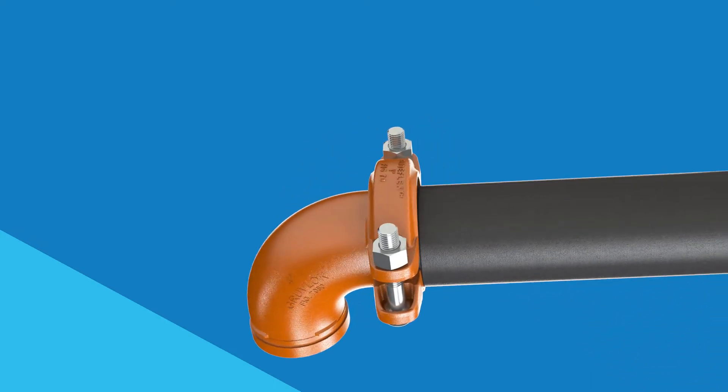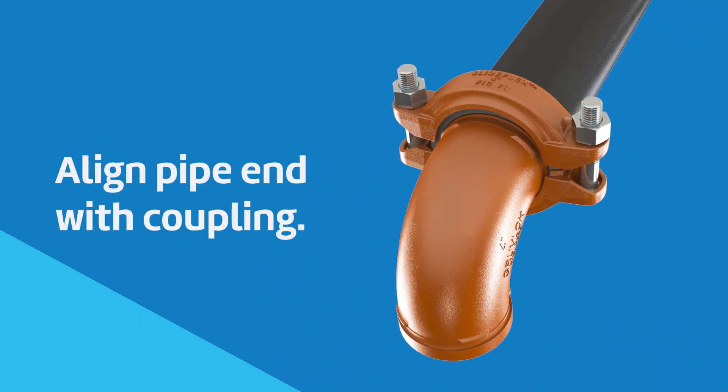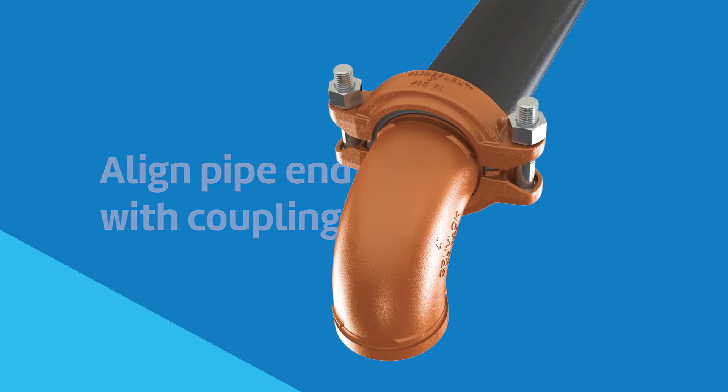Bring the pipe end and figure 70 coupling together and insert the grooved pipe end into the coupling so the keys and groove are aligned.